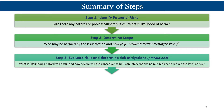The third step is to evaluate the risks and determine risk mitigations, otherwise known as precautions. You want to look at what is the likelihood that a hazard will occur, and if it does occur, how severe might the consequences be? Can I put any interventions into place to reduce the level of risk — any risk mitigations, any steps? You want to take time to really go through all of the points of contact, any failure points, your scope, to determine these potential interventions you might be able to implement.